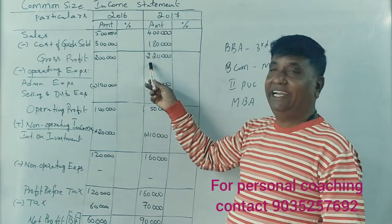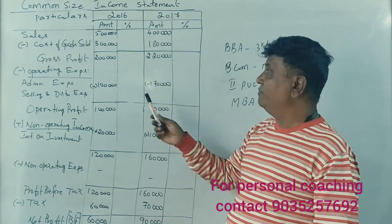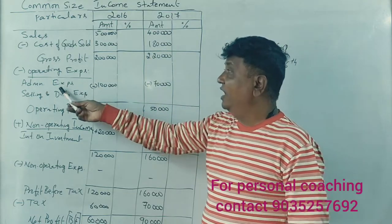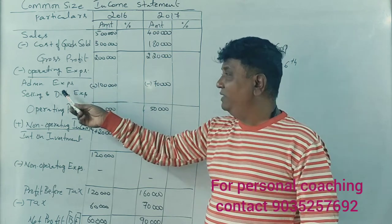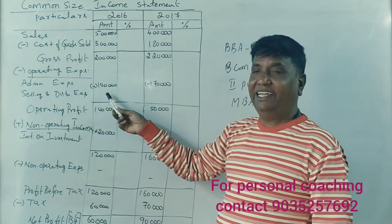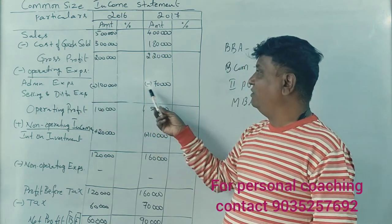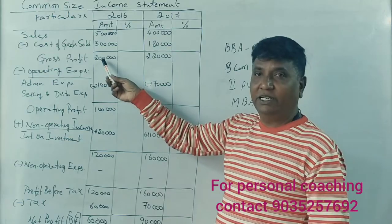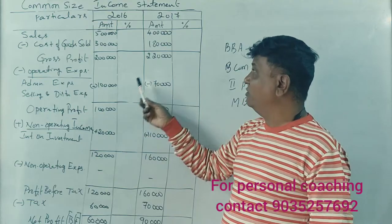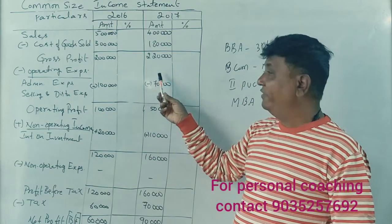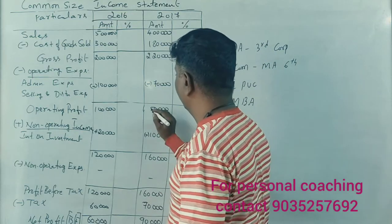In 2017, 4 lakhs minus 1 lakh 80 thousand equals 2 lakhs 20 thousand. Operating expenses — administration and selling expenses — are 1 lakh and 70,000. So: 2 lakhs minus 20 thousand gives 1 lakh 50,000, and 2 lakhs 20 thousand minus 70,000 gives 1 lakh 50,000.